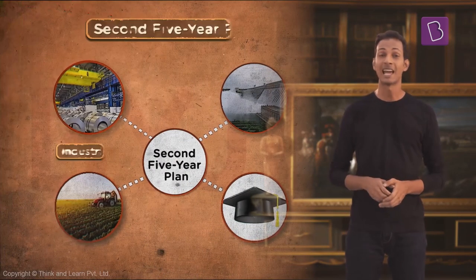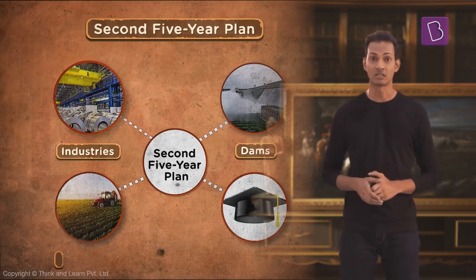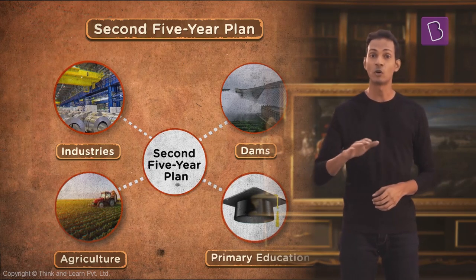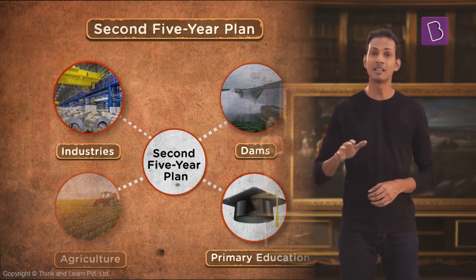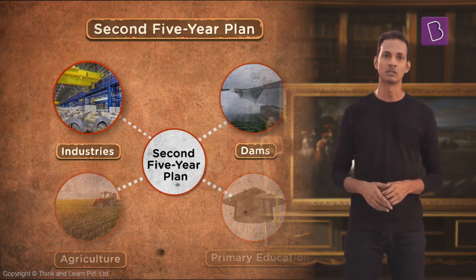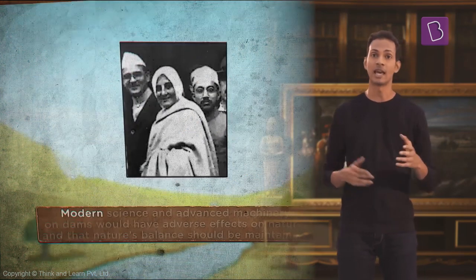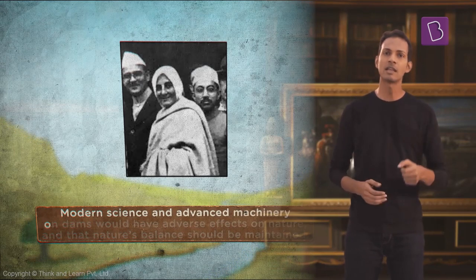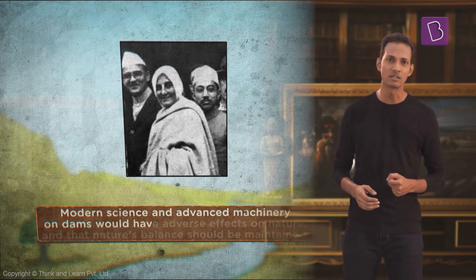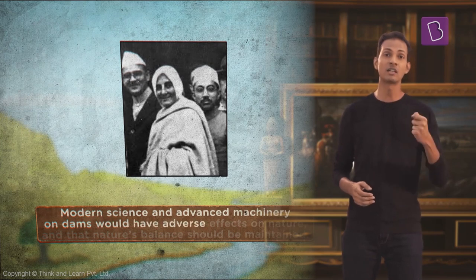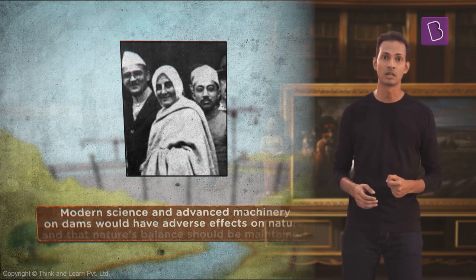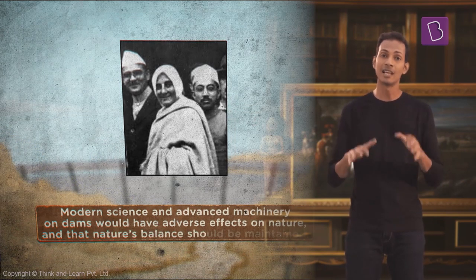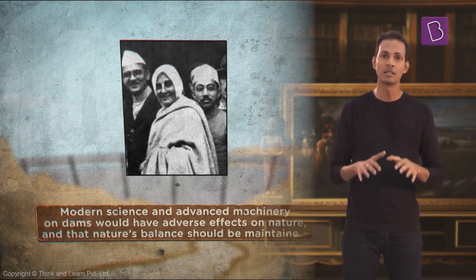The second five-year plan had many critics. Some people felt that the plan did not focus on agriculture and neglected primary education. Others, like Meera Ben, a follower of Mahatma Gandhi, said that modern science and advanced machinery on dams would have adverse effects on nature and that nature's balance should be maintained.